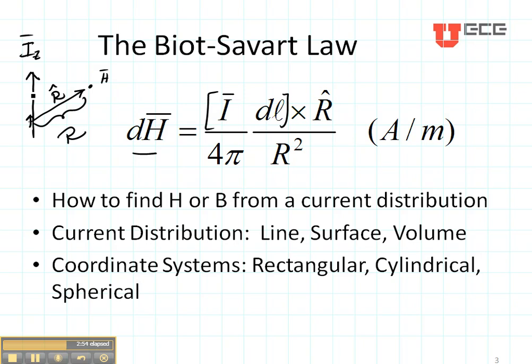So I take my I and I cross it with this unit vector, and that gives me the top portion of the Biot-Savart. I find the distance between my source and my magnetic field, and that gives me the distance R squared.